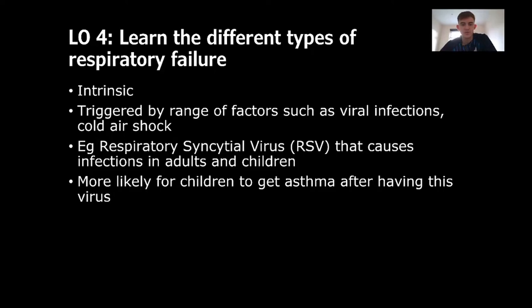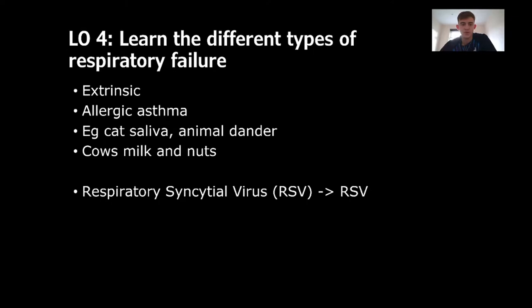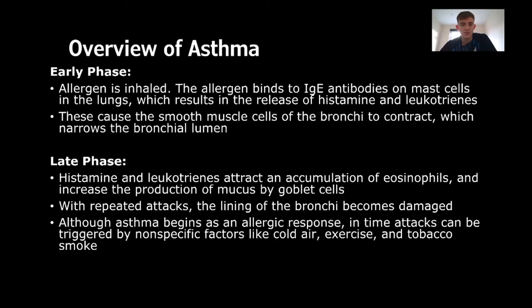Intrinsic triggers include a range of factors such as viral infections, cold air, and shock. For example, respiratory syncytial virus (RSV) can cause infections in adults and children, and people who contracted this virus were more likely to develop asthma later in life. Extrinsic triggers relate to allergies, such as cat saliva, animal dander, dust mites, and nuts.